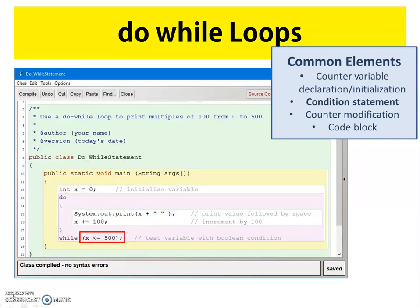After the code block is closed with that curly bracket, we have the while keyword, and then finally we have our condition statement. The condition statement says that as long as x is less than or equal to 500, the do-while loop should be processed again. Remember, the do-while loop is going to process at least one time, and then it's going to check the condition statement. If the condition statement is true, then it's going to go back and run through the process a second time.